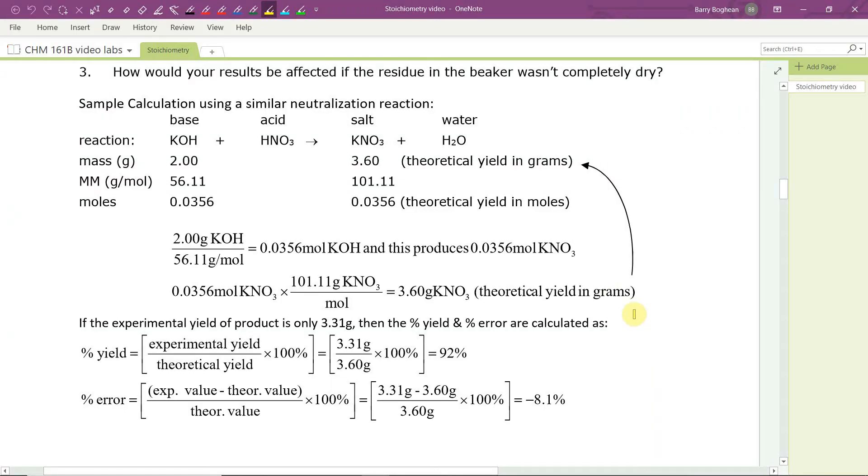I'm going to examine the calculations by looking at a different reaction. And then you can apply it to the reaction we just studied. In this case, potassium hydroxide is a strong base and it reacts completely with nitric acid, a strong acid.